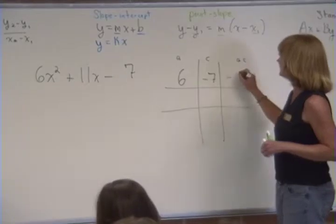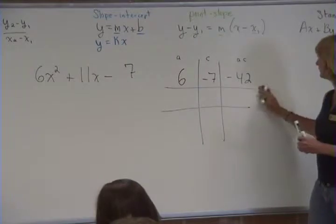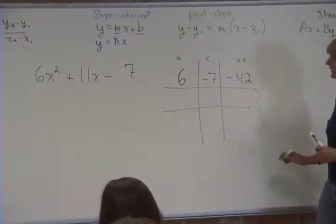Their product is negative 42. Now these two numbers, the two factors of 42 that you need to list, here and here.